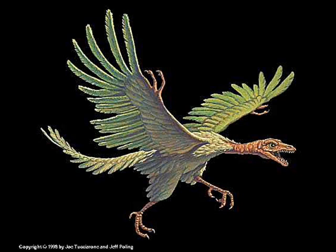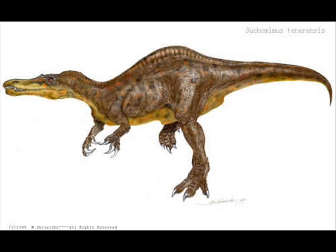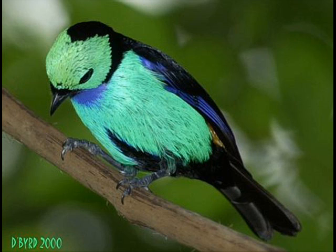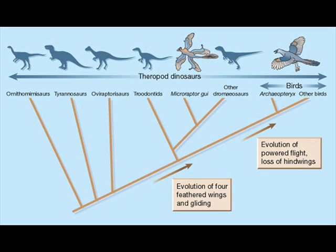However, birds are not directly descended from it, in the same way that we are not directly descended from chimpanzees — we share a common ancestor, just as birds share a common ancestor with this thing. Evolution is not a strict linear progression. You do not go from dinosaur, to feathered dinosaur, to Archaeopteryx, to a modern bird. It's more like a tree: all of the dinosaurs, the pre-birds, and modern birds share common ancestry, and then branches come off as time progresses. You get forms that look transitional as the tree advances.